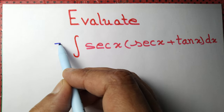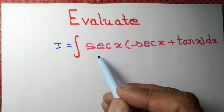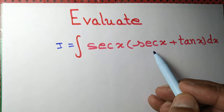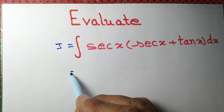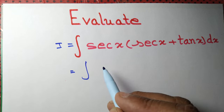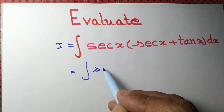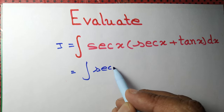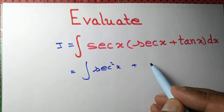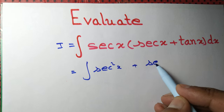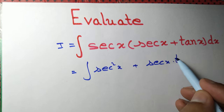Evaluate the integral I equal to the integral of sec x into (sec x + tan x). This can be written as the integral of sec²x + sec x tan x, by multiplying out the expression.